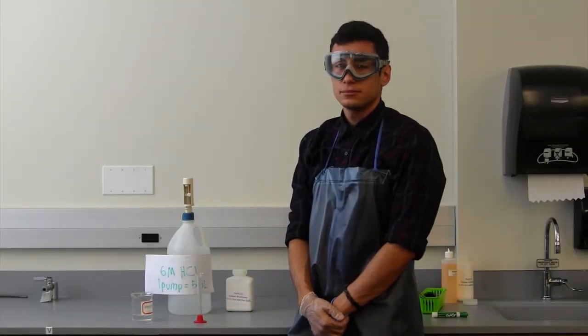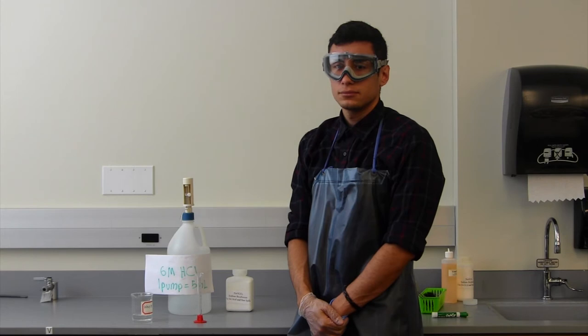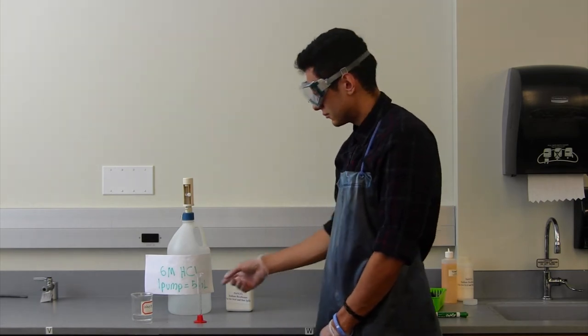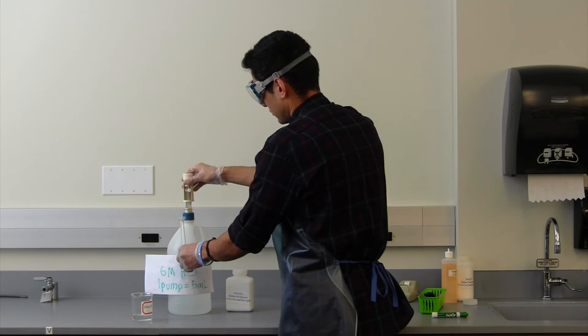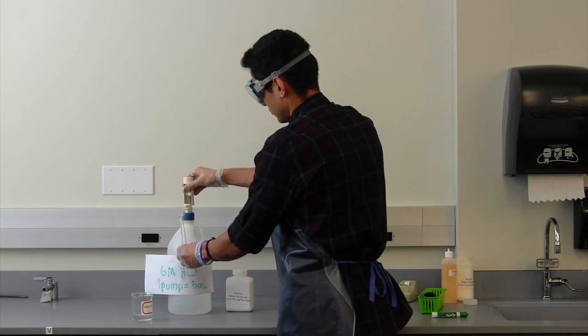Now it is time to cover some mistakes performed by eager general chemistry students, which although they are in good faith, are wasteful and destructive practices. The first mistake to be covered is overpumping reagent. This usually results from pressing the pump too many times.